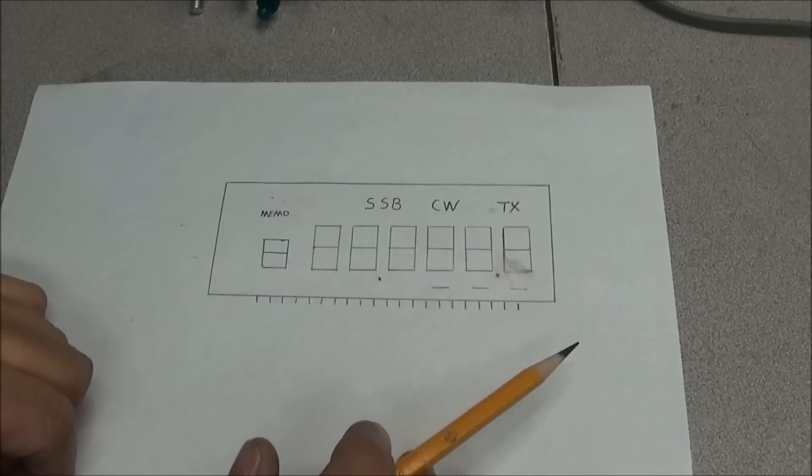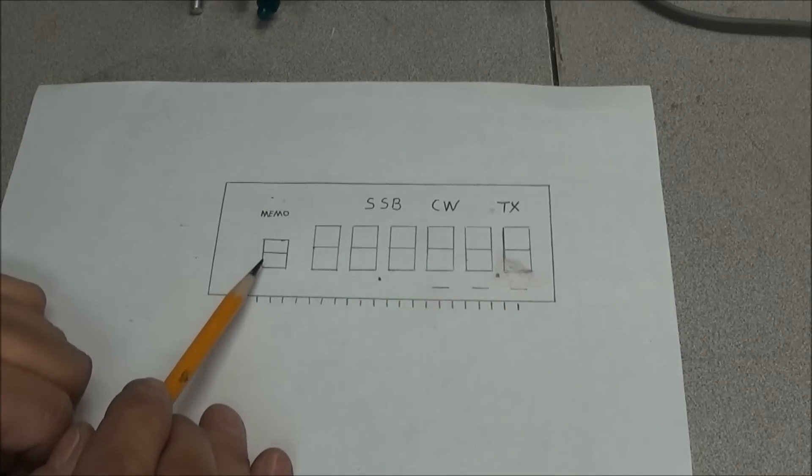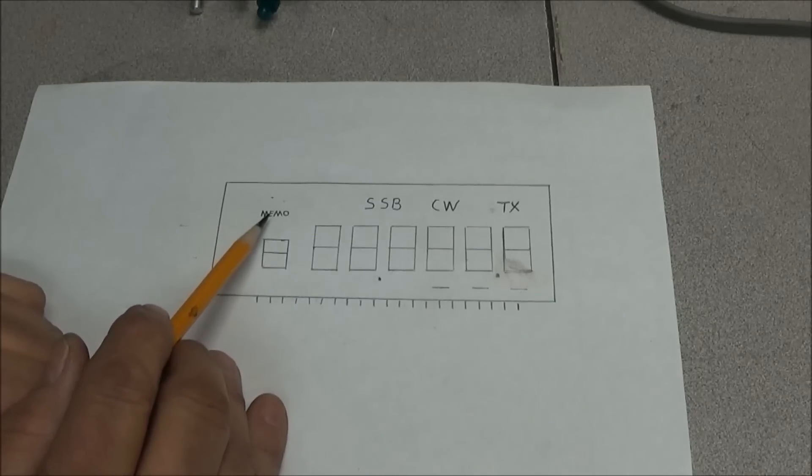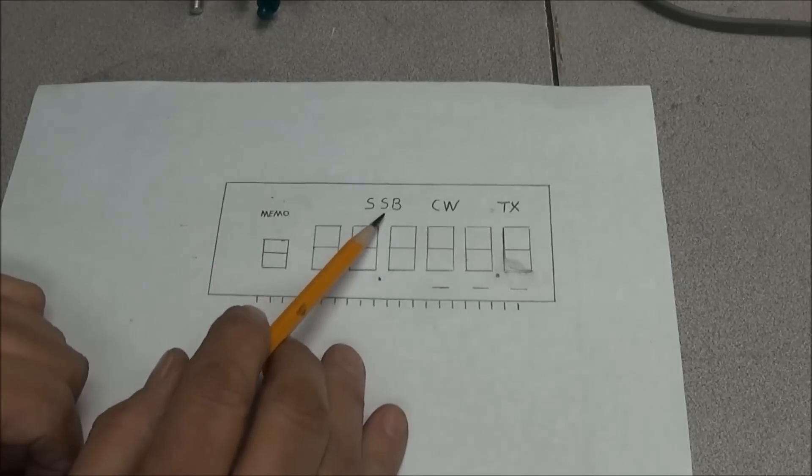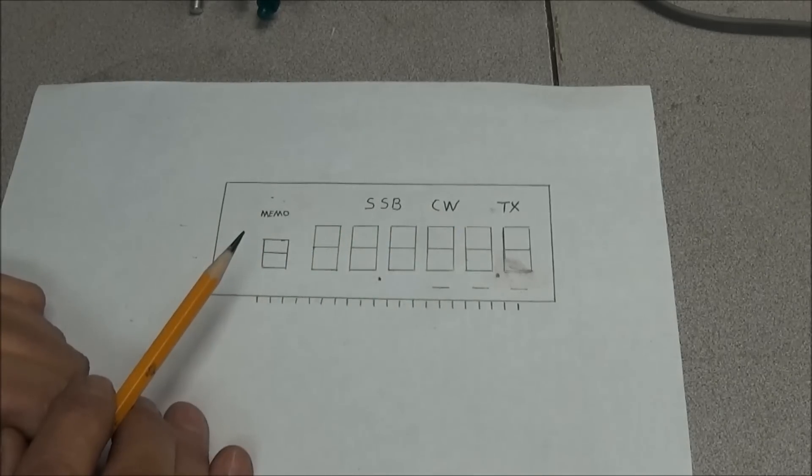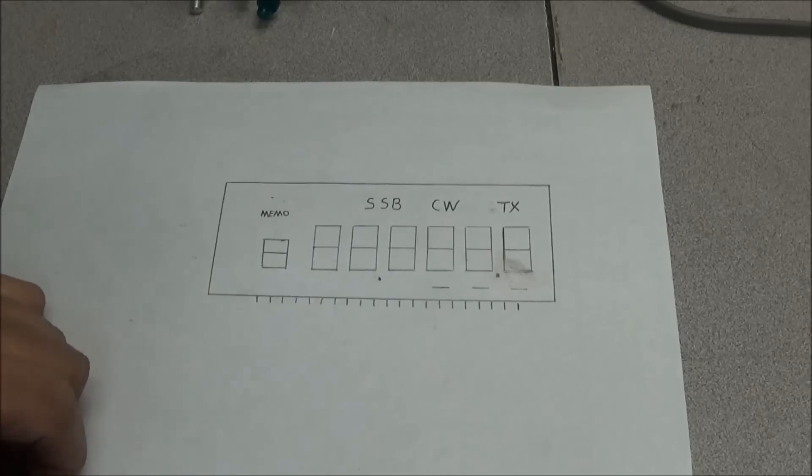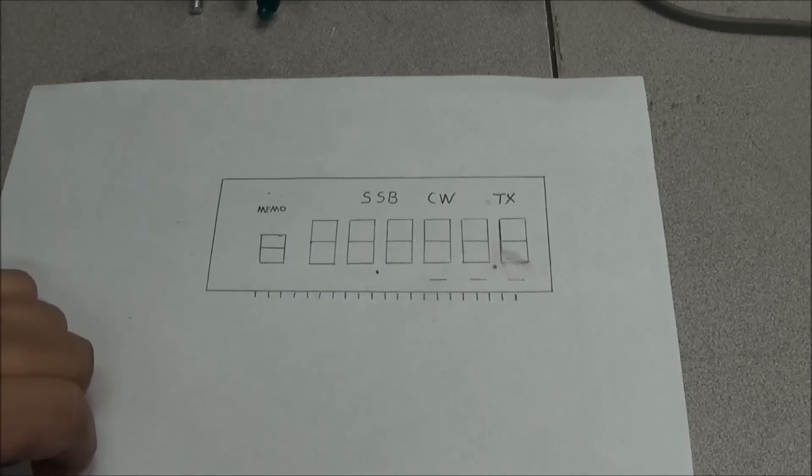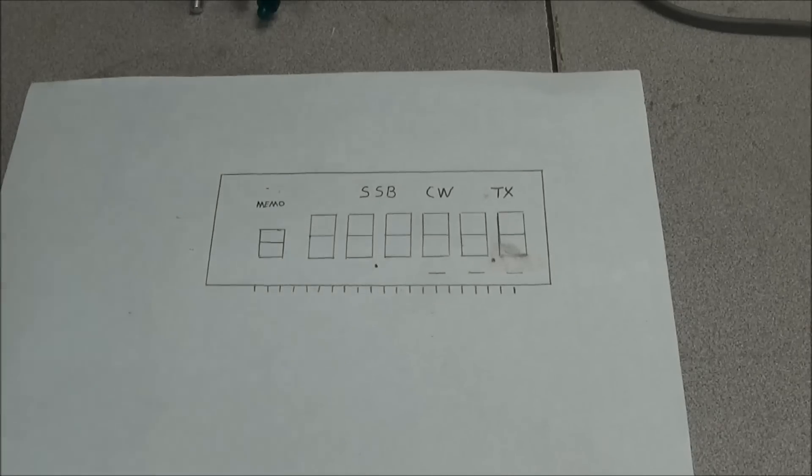We also have a one through zero numeric number for memory channels. You have memo up here for memory channels and it displays single sideband, CW, and transmit. And like I said, there's no way you can go out and find a direct replacement LCD for this radio. So whatever you do is going to have to be custom made. So what I'm looking at is actually having to take the faceplate.